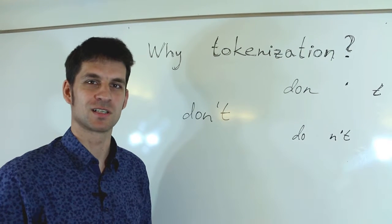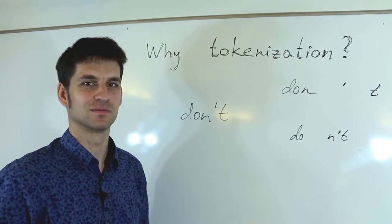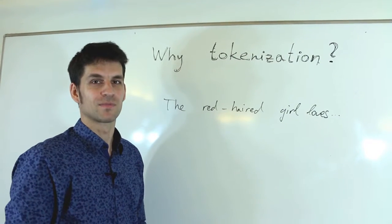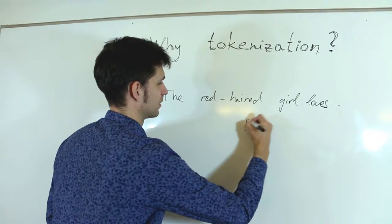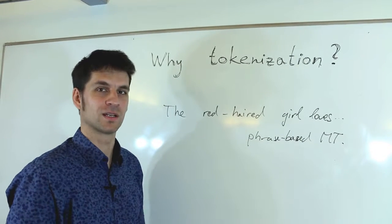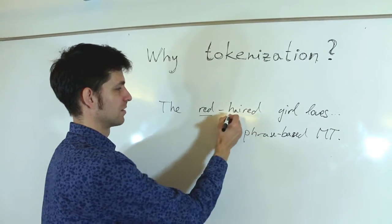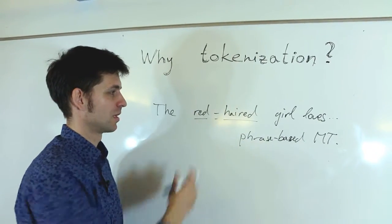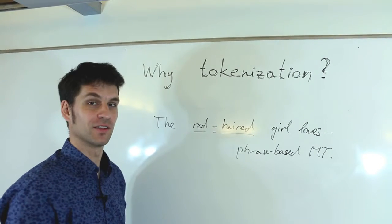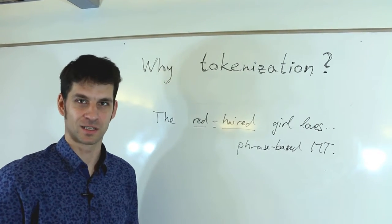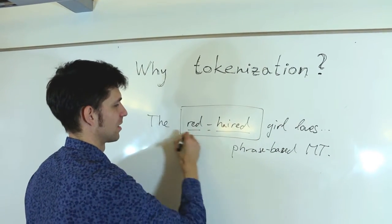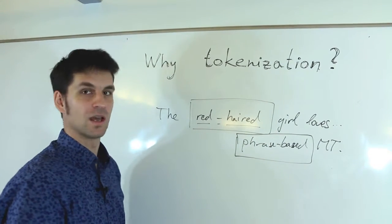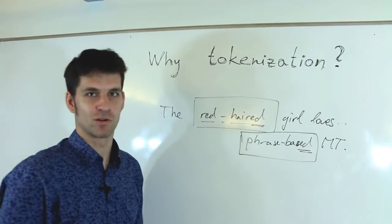The reason is that the various subsequent processing steps may need different tokenization. Take the sentence 'the red-haired girl loves something.' For some approaches to machine translation, such as the phrase-based one, it is actually better to split as much as possible — treating the words 'red', 'haired', and also the hyphen as separate symbols, so the system can learn all the various colors and properties separately. But for other types of processing, such as syntactic analysis, it is better to treat these units as wholes, because they both serve as adjectives in the sentence, and a simple heuristic based on the suffix -ED can easily recognize that.